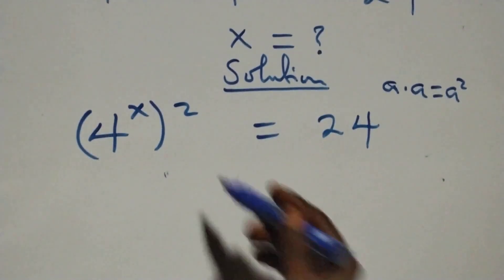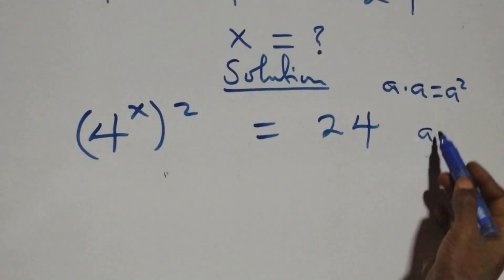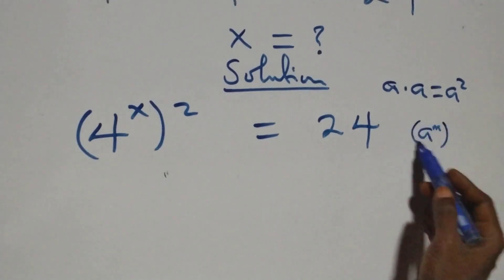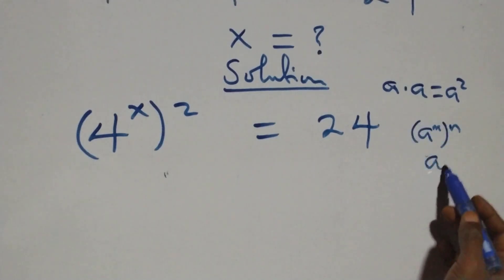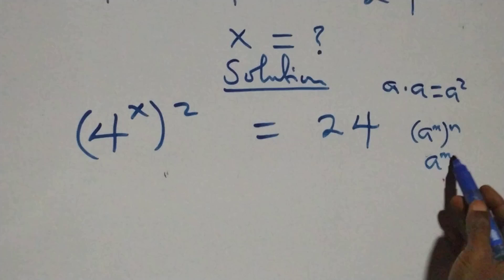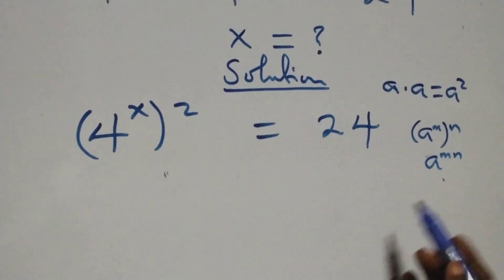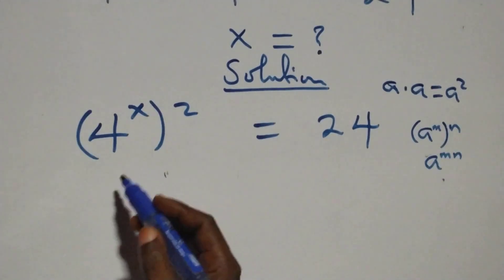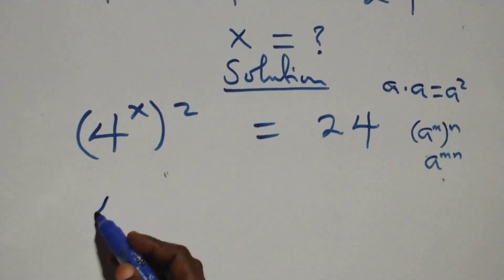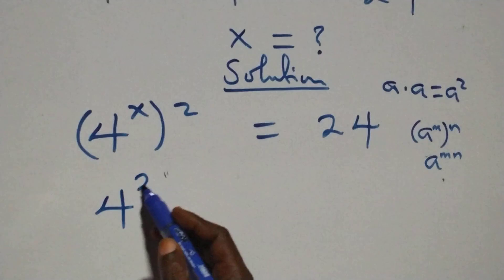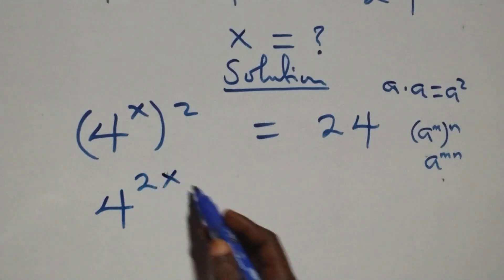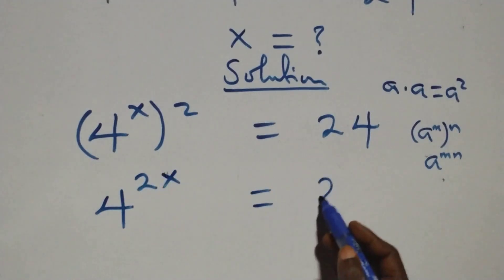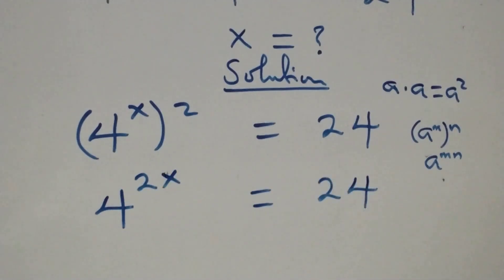This follows the rule: a raised to power m, raised to power n, is the same thing as a raised to power mn. Applying this here, the power multiplies and we have 4 raised to power 2x equals 24.